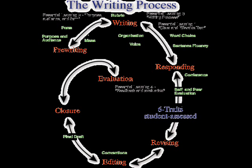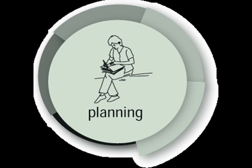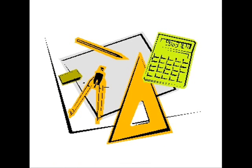Those steps are called the writing process. The writing process includes thinking, planning, organizing, drafting, revising, and editing. Writing is a process that involves at least four distinct steps. Pre-writing includes thinking, planning, and organizing.